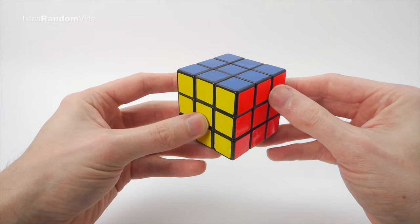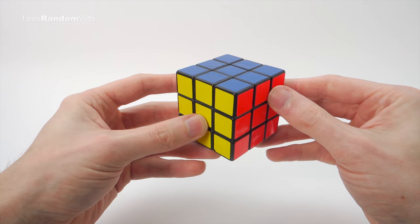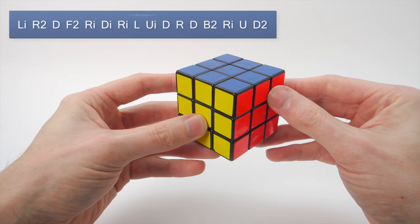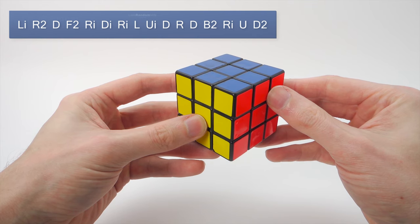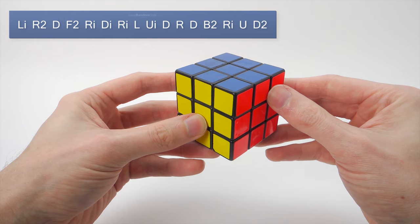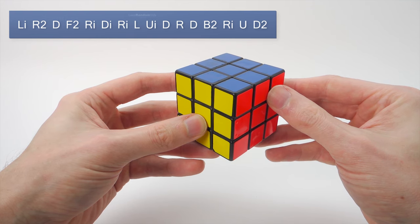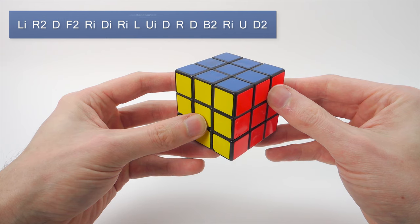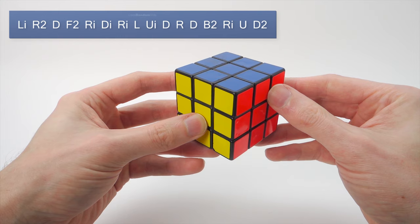So to do this pattern we just need to use an algorithm. And that algorithm is Li R2 D F2 Ri Di Ri L Ui D R D B2 Ri U D2.